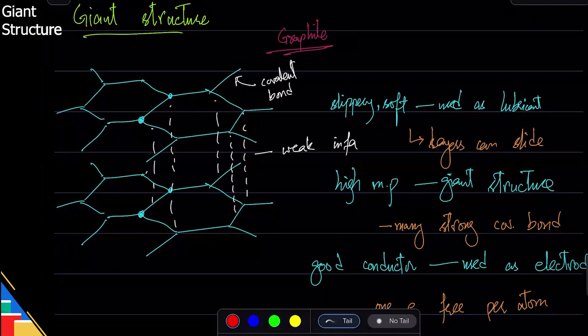Yesterday we were talking about giant structures. We started with covalent bonding, and giant structure is one of the two structures made by covalent bonding. There's the simple molecular one and the giant structure. Giant structure is different from the properties of simple molecular one because it has a network, it is a lattice.